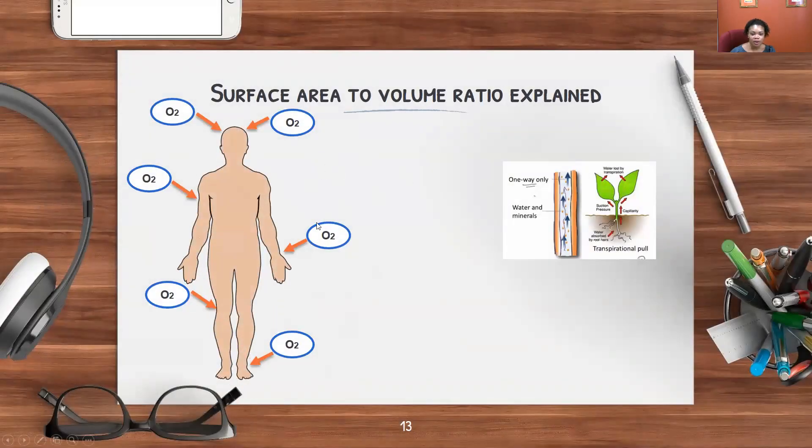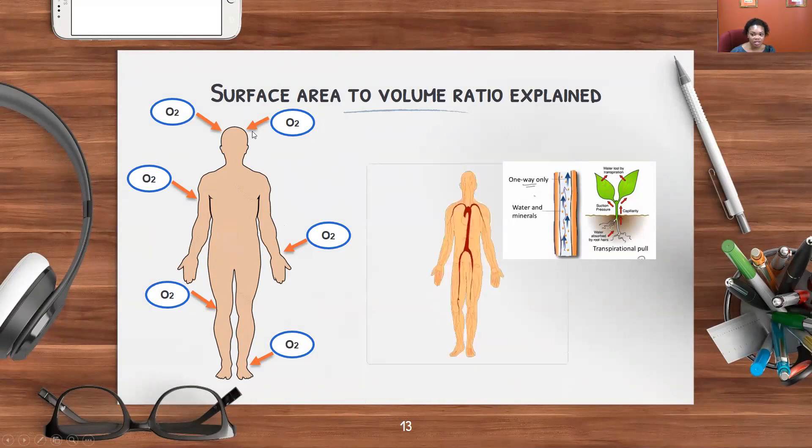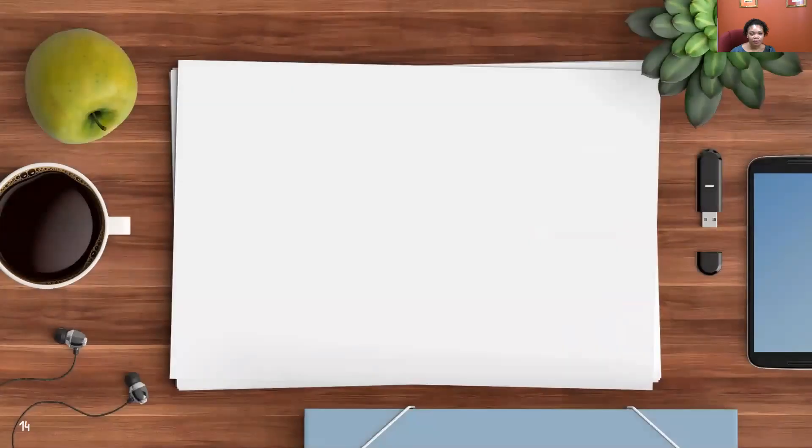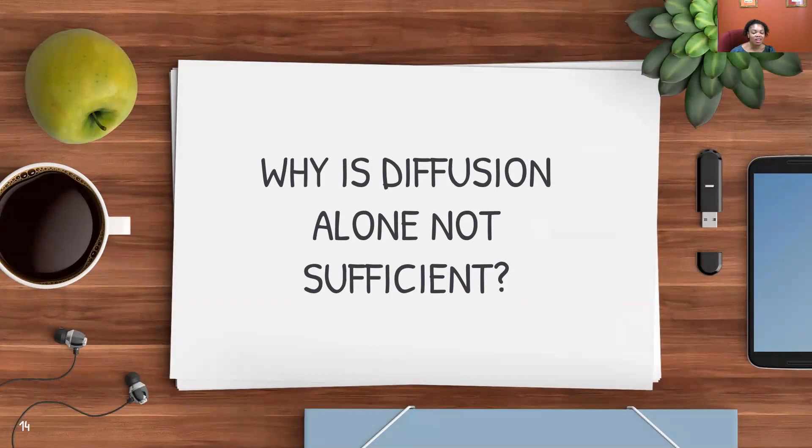For large organisms, multicellular organisms like human beings, you find that if we were to wait for oxygen to diffuse across our skin, it wouldn't happen. We would die, because our surface area to volume ratio is small. Even though we are larger, the ratio of surface area to volume is small, and so diffusion alone is not sufficient. To get the nutrients and the gases and oxygen that we need, we need a transport system. We have a circulatory system for human beings, and for plants, plants have their own transport system as well to get the things that they need.